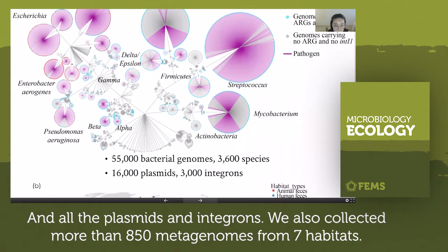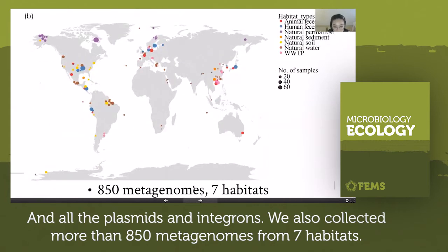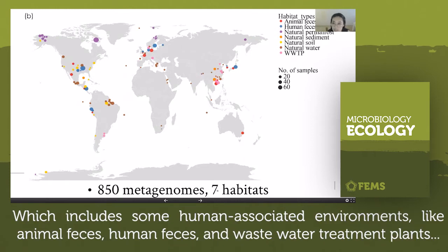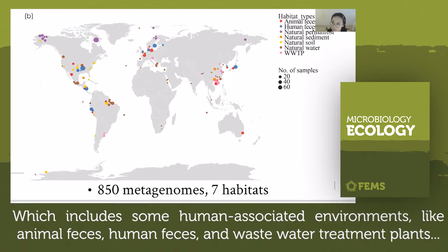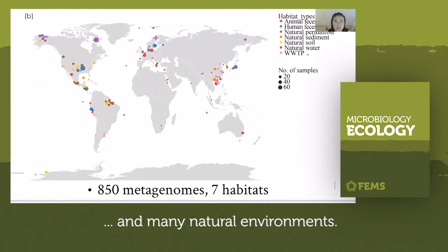We also collected more than 850 metagenomes from seven habitats, which includes some human-associated environments like animal feces, human feces, and wastewater treatment plants, and many natural environments.